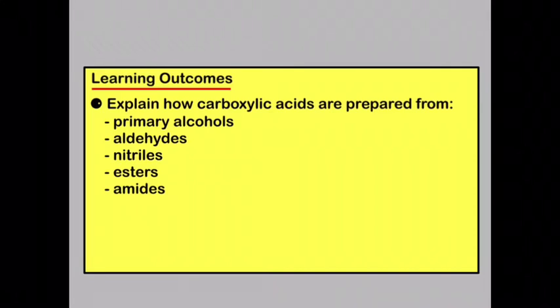So by now you should be able to explain how carboxylic acids can be prepared from primary alcohols, aldehydes, nitriles, esters and amides.